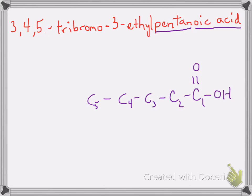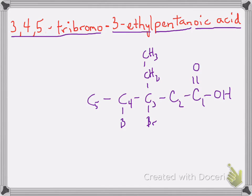Now we figure out the substituents. On the three carbon there's an ethyl group, so I draw an ethyl group on carbon three. I also have bromo groups on the three, four, and five carbons, so I go ahead and draw those on. Then I decorate the rest of the bonds with hydrogens to make sure each carbon has four bonds, each hydrogen has one, and every oxygen has two. There's the correct structure of 3,4,5-tribromo-3-ethyl pentanoic acid.